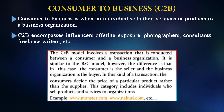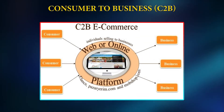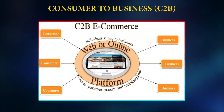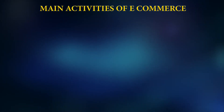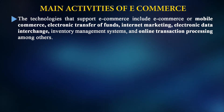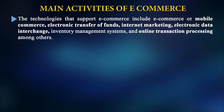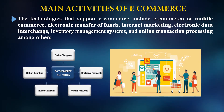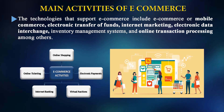The C2B model involves a transaction between a consumer and a business organization, similar to B2C but with the consumer as the seller and the business as the buyer. In this transaction, the consumer decides the price of a particular product rather than the supplier. This category includes individuals who sell products and services to organizations — for example, job platforms like Monster or Naukri.com. The main activities of e-commerce are supported by technologies including mobile commerce, electronic transfer of funds, internet marketing, electronic data interchange, inventory management, and online transactions. E-commerce activity revolves around virtual auctions, internet banking, online ticketing, electronic payments, and more.